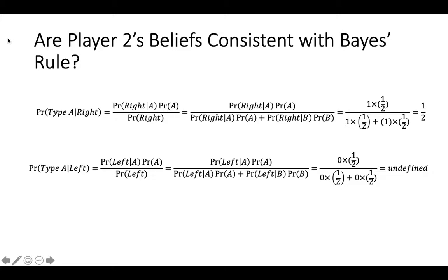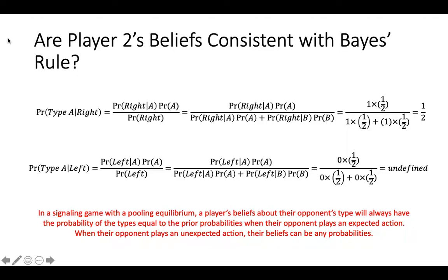As a last check, we can see that both these sets of beliefs are consistent with Bayes' rule. Because the probability that player 1 is type A when they play left is undefined, player 2 can hold any set of beliefs about player 1's type, as long as the probabilities of these types add up to 1. Note that in a signaling game with a pooling equilibrium, a player's beliefs about their opponent's type will equal the prior probabilities when their opponent plays an expected action. When their opponent plays an unexpected action, their beliefs can be any probabilities. This concludes this video on signaling games. Thank you for watching.